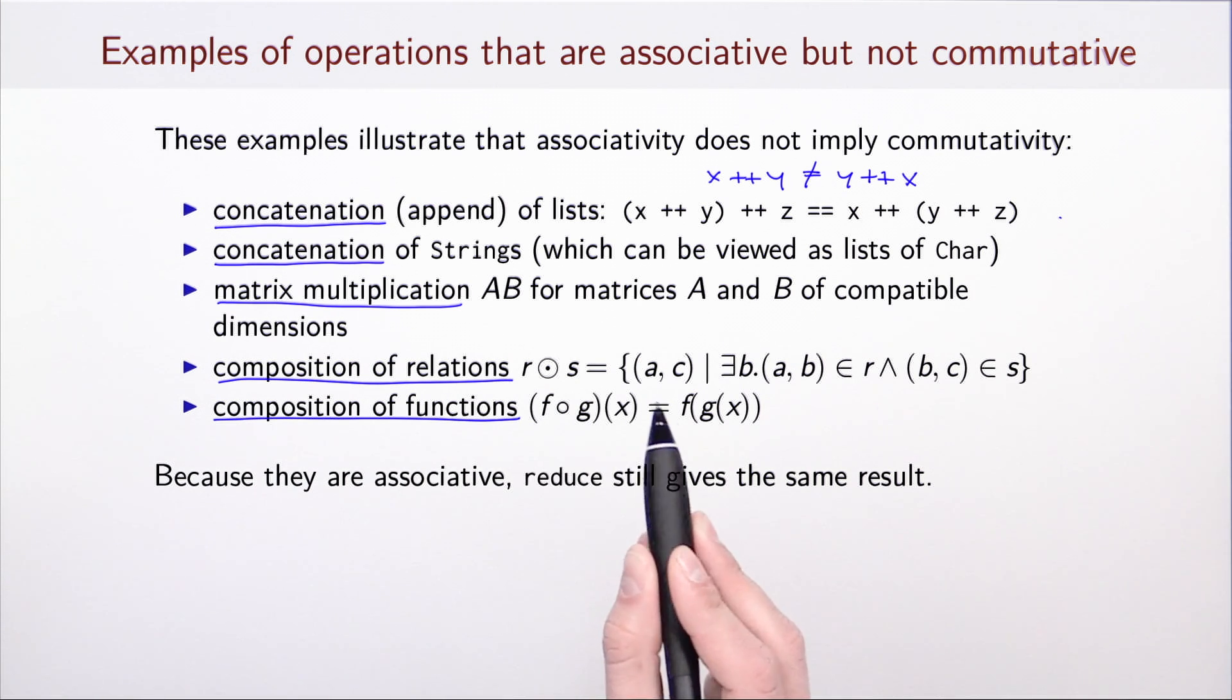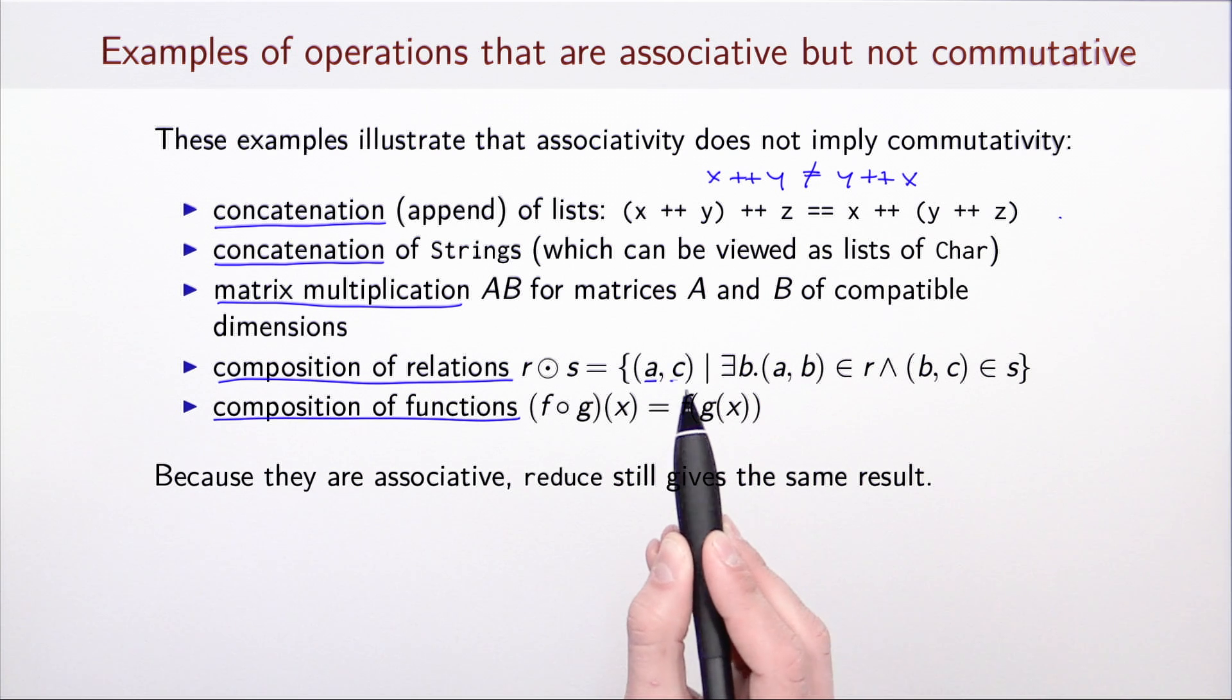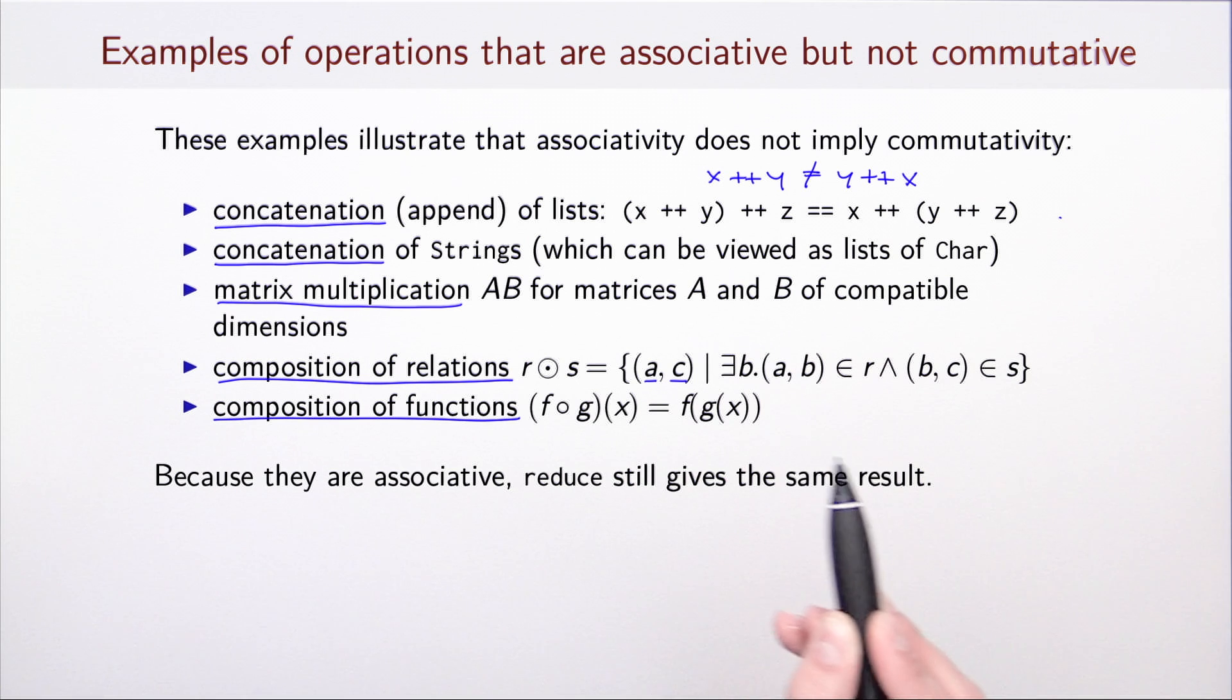Composition of relations collects all elements that are pairs of a and c such that there exists element b where (a,b) belongs to the first relation and (b,c) in the second relation. And composition of functions can be viewed as a special case of that, occasionally with different conventions on the ordering of the operands. For all these operations, because they are associative, reduce gives the same result as for example reduceLeft, even though they are not commutative.